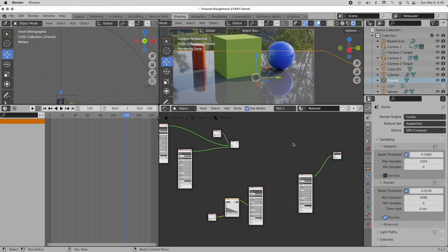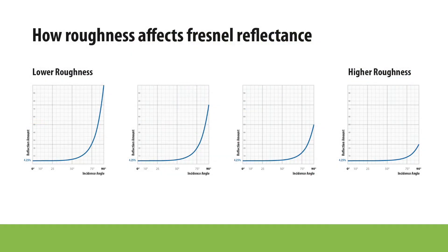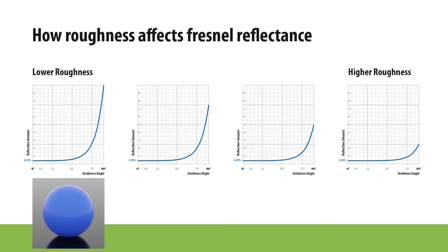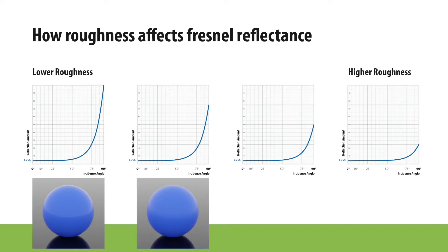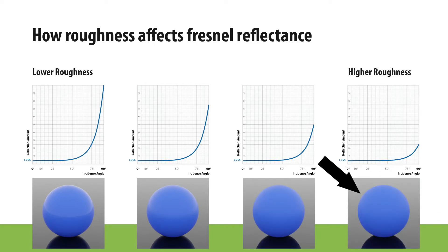By default, Blender does not give us this variability. Looking at these four charts: when roughness is very low, the surface looks very sharp — a perfectly mirror-like surface. As surface roughness increases, the low-incidence face-on regions maintain about the same degree of reflectivity. However, as roughness increases, the shading system decreases the degree of reflectivity at those higher glancing angles. We want to override this default behavior in order to get both increasing reflection intensity and sharper, more mirror-like reflections at higher incidence angles.